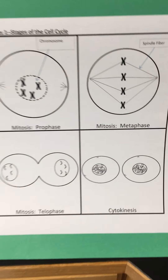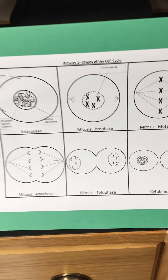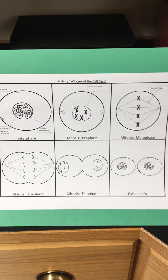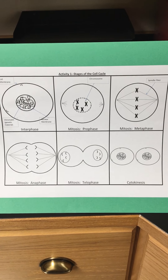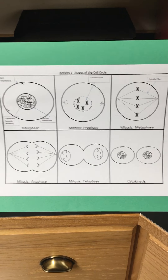So these are the six steps that we'll be looking for — the stages of the cell cycle — and we're going to check out our onion slides and see which of these we can find.